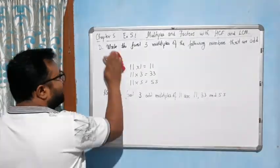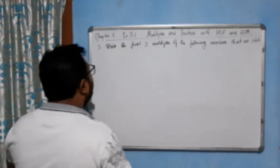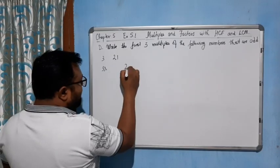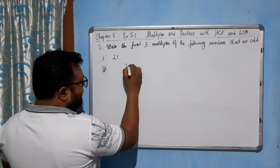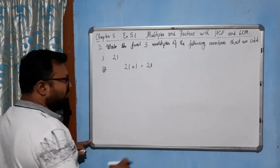Now come to the next question, 21. 21 into 1 gives you 21, so it is an odd number, no problem.